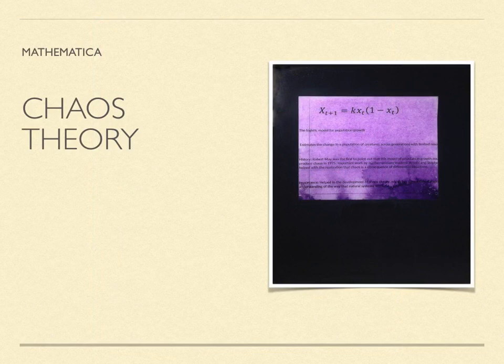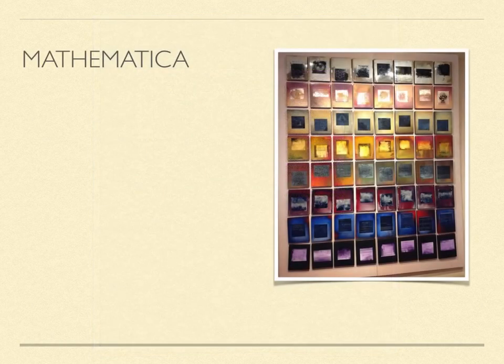The last series includes equations that either point to the future or to the limits of mathematical knowledge. This one is chaos theory — specifically May's logistic model for population growth. He was doing a study in population biology, but an inadvertent conclusion of the equation is that chaos is a result of differential equations, which are so fundamental to our modern science and mathematics. I also included this one because it has a really cool name: chaos theory.